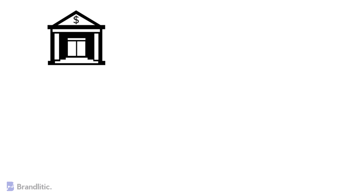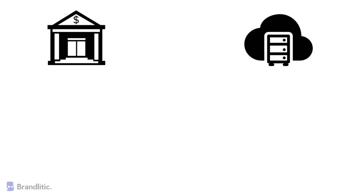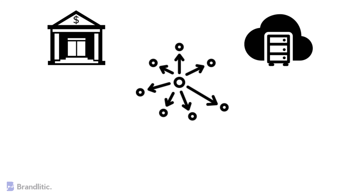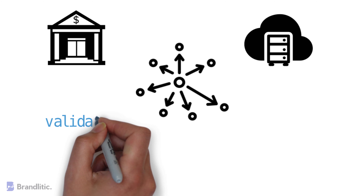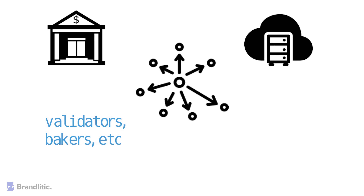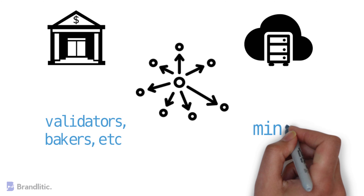In a centralized institute like a bank, every transaction can be verified by a central authority — the bank's central server. However, the lack of a centralized authority in the crypto world requires the verification and subsequent validation of these blocks by decentralized nodes of the network. These nodes are known by a variety of names — validators, bakers, etc. Their counterparts in a proof-of-work network, like Bitcoin, are called miners.